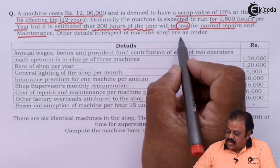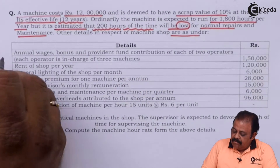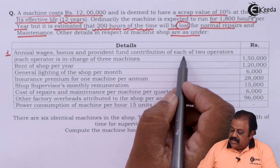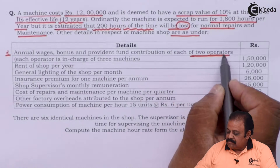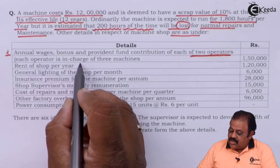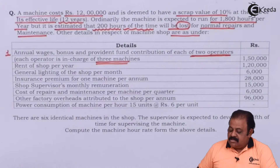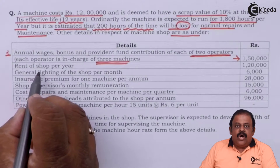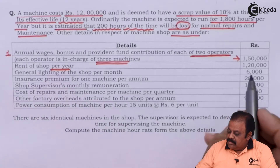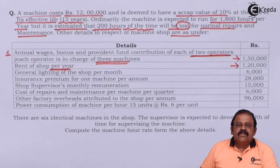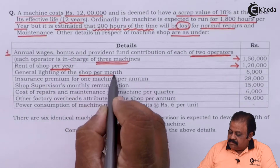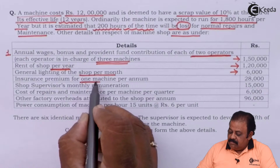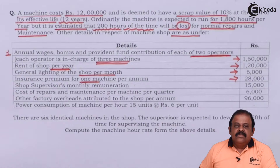Other details in respect of the machine shop are as under. Annual wages, bonus, and provident fund contribution of each of two operators — each operator is in charge of three machines out of six — amount is Rs. 1,50,000. Rent of shop per year: Rs. 1,20,000. General lighting of the shop per month: Rs. 6,000. Insurance premium for one machine per annum: Rs. 28,000.